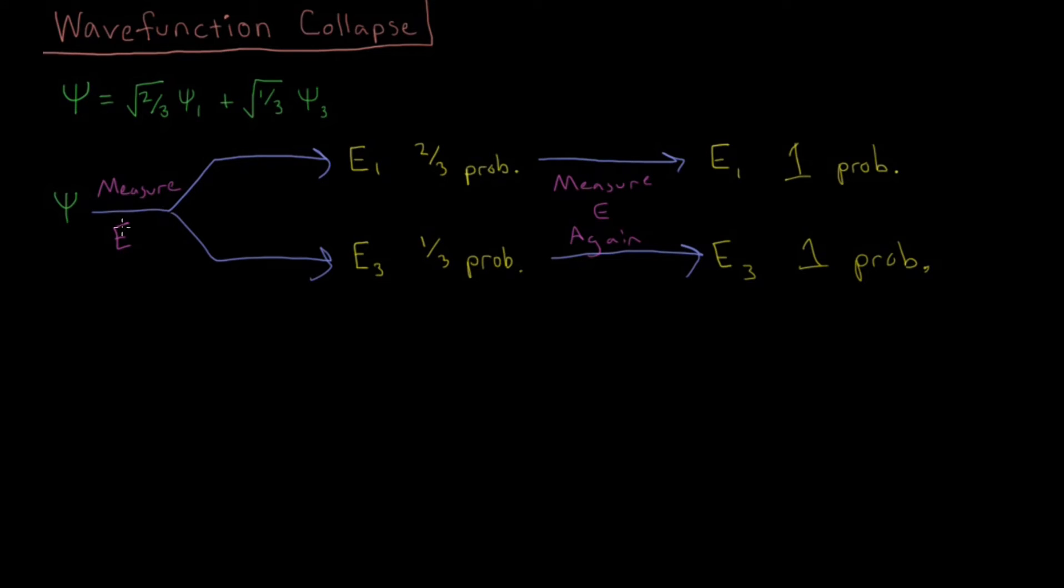But once we measured the energy, the energy can only be one of the possible eigenvalues. And when we measure that eigenvalue, the wave function is said to collapse into this eigenstate or this eigenfunction. So as soon as we measure E1, psi is no longer this superposition here, psi is only psi1.